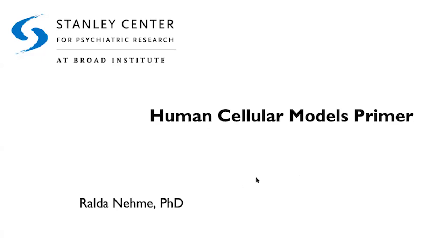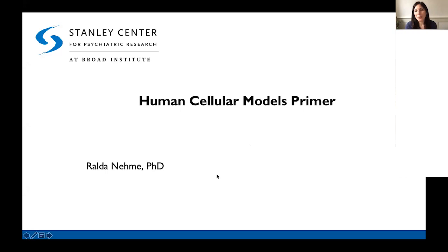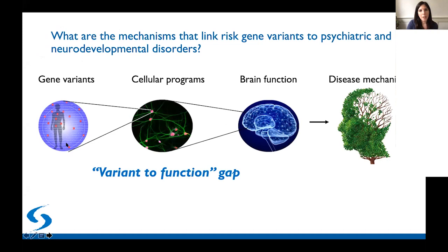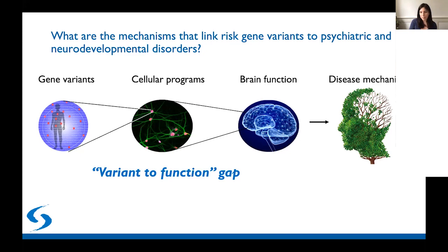It is my pleasure to host a primer on human cellular models today. We're hoping to discuss how we can use specific cell types derived from human pluripotent stem cells to study neurodevelopmental and psychiatric disorders. We're interested in understanding how genetic variants associated with these disorders translate into molecular changes in human cells, which cellular programs are affected, and how they shape the development, function, and connectivity of the human brain. What we're really trying to get at is bridging this variant-to-function gap.